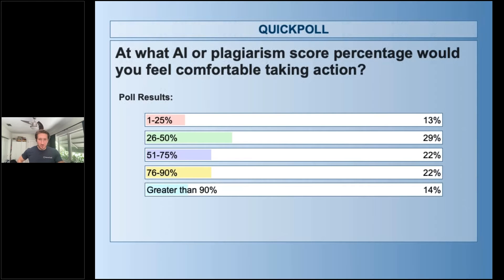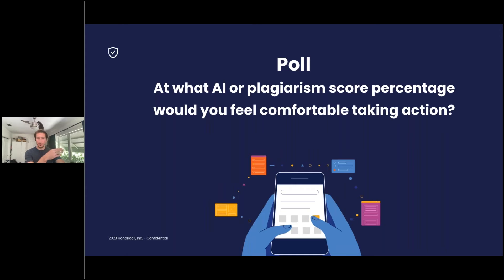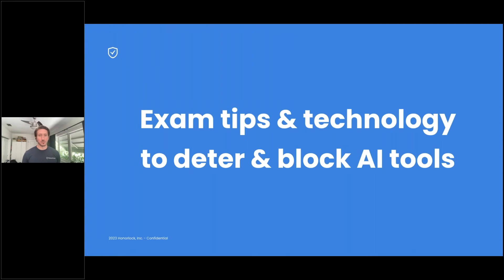Looking at the results: greater than 90% had 14% of respondents, 76–90 at 22%, 51–75 and 26–50 spread relatively evenly. This goes to show there's no right or wrong answer here — probably why responses are so spread. Given how prompts can change those percentages so drastically, it makes it difficult to set a standard and say every time above, say, 75% we're going to take action. Now we can get into solutions — how can we evolve to live in this new world and leverage or block AI as needed.